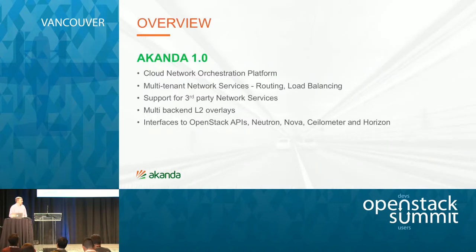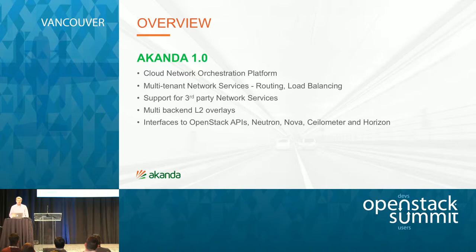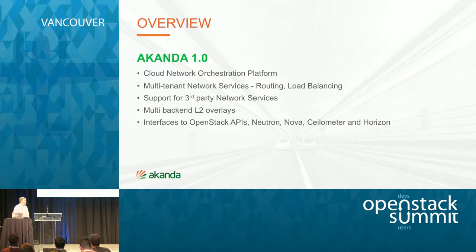In our current release, which is Aconda 1.0 — announced just prior to the summit — it includes an orchestration platform which we refer to as the rug, kind of a reference to the Big Lebowski, which was the original code name for the project. Aconda supports multi-tenant network services including routing and load balancing, as well as support for third-party network services.